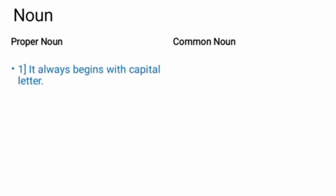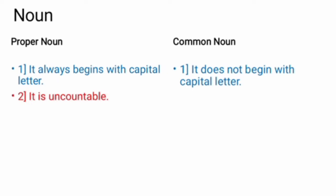Let us see the difference between proper noun and common noun. Proper noun always begins with capital letter. Whereas, common noun does not begin with capital letter. Number two, second difference. It is uncountable. It cannot be countable. Though, it is singular.